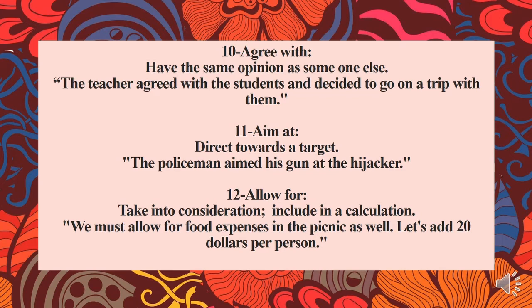The eleventh phrasal verb is 'aim at,' which means to direct towards a target or to attack towards a target. Observe the sentence: The policeman aimed his gun at the hijacker. It means the policeman was directing his gun towards his target.